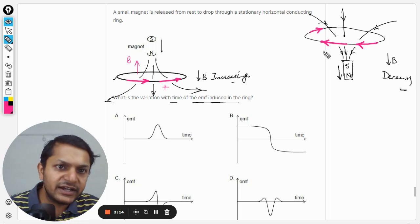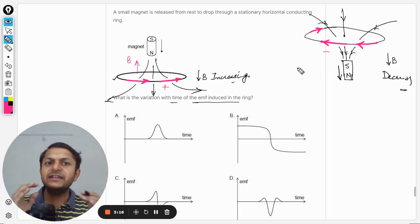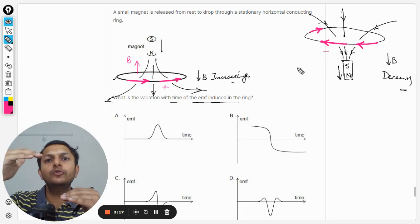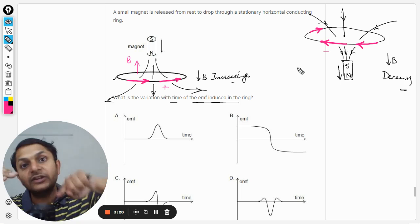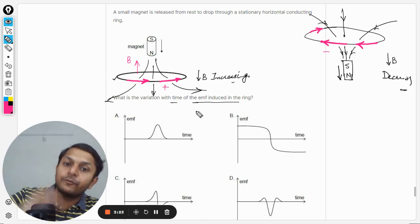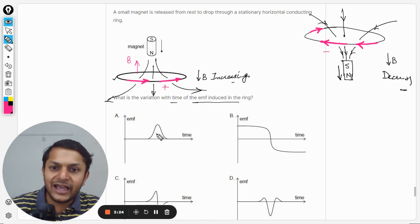Now this direction is taken to be positive, it means this direction is negative. It means immediately when the magnet crosses the loop, the current starts moving into the reverse direction, so it converts itself from positive to negative. So option A with only positive current is wrong.